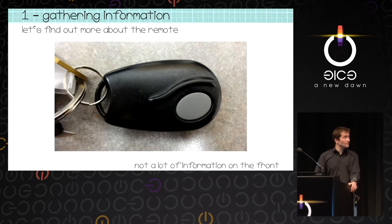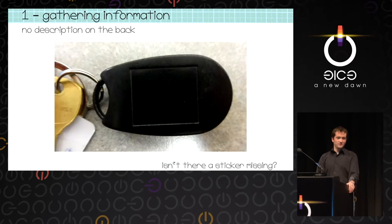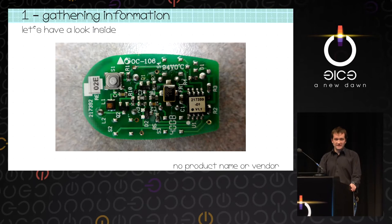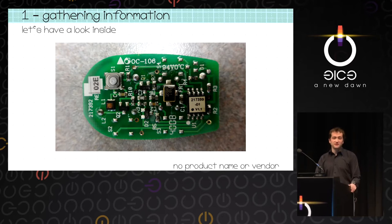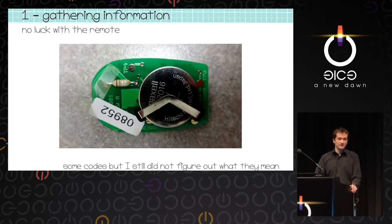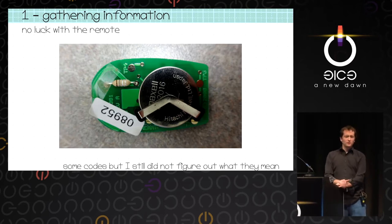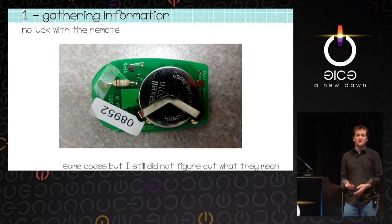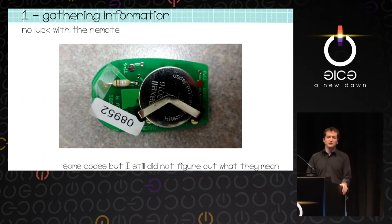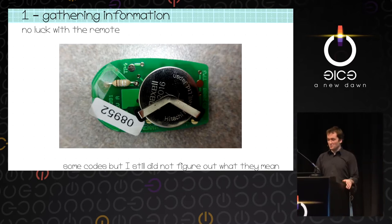We need to identify the remote. On the front, there's not a lot of information. On the back, nothing written — there's even a sticker missing. If you open it, the electronics are pretty simple and don't have a lot of components, but it doesn't tell you who the vendor is or what the product is. There are two stickers — I think it's the code which is transmitted — but we never really figured out how they encoded or transmitted it. We didn't find any information.